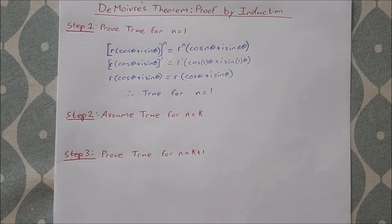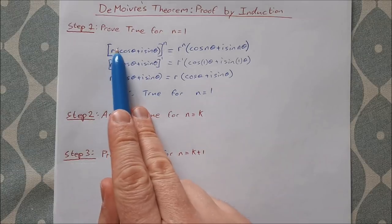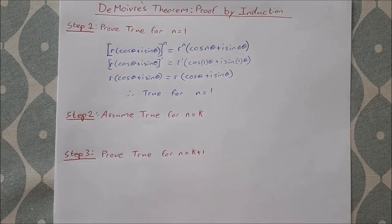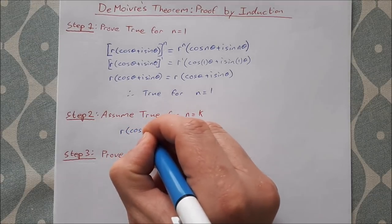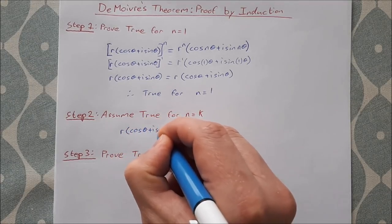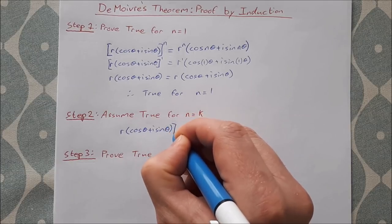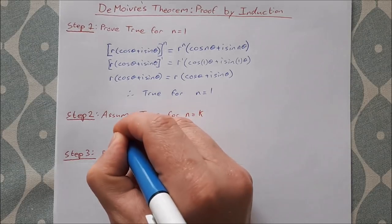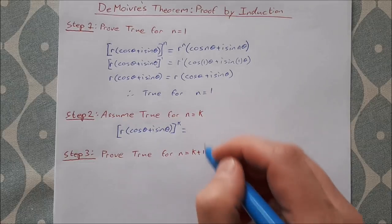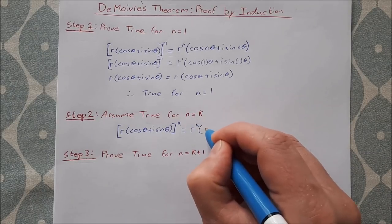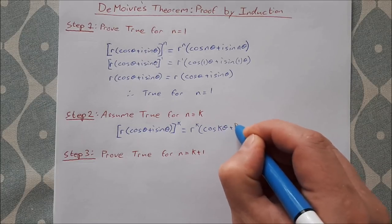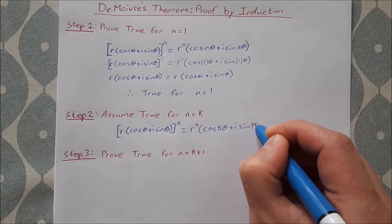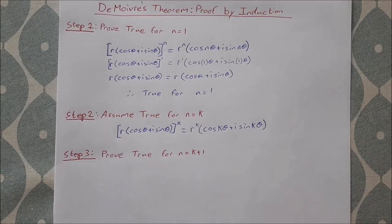Step 2 is assume it's true for n equal to k. Basically just take the theorem and substitute k in for n. So that'll be r times cos theta plus i sine theta to the power of k, equal to r to the power of k times cos k theta plus i sine k theta. That's an assumption we make and use in step 3.